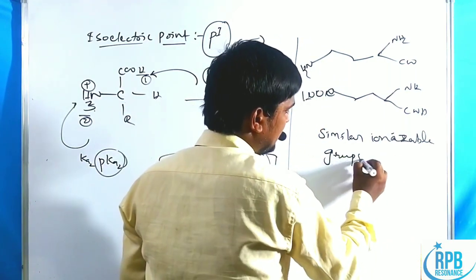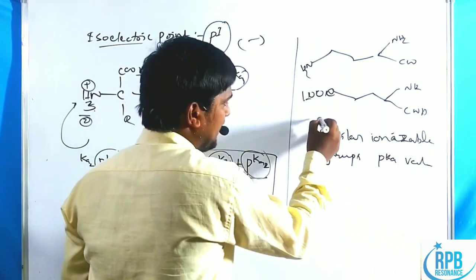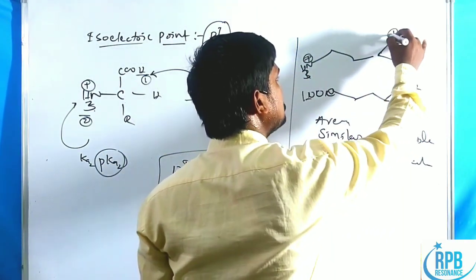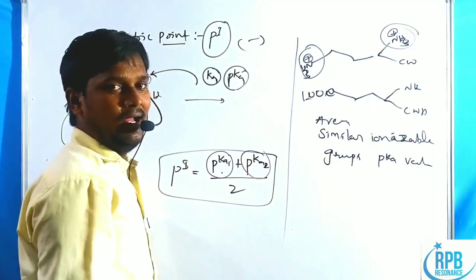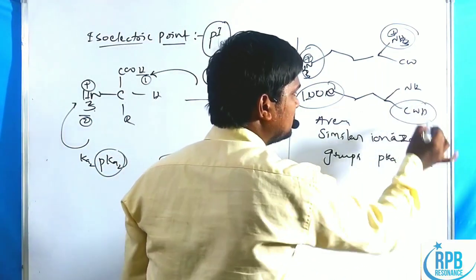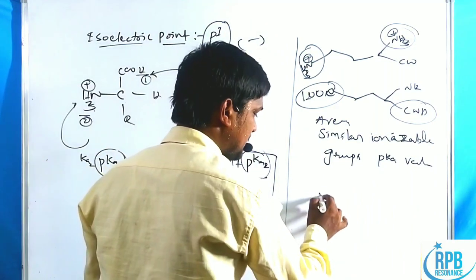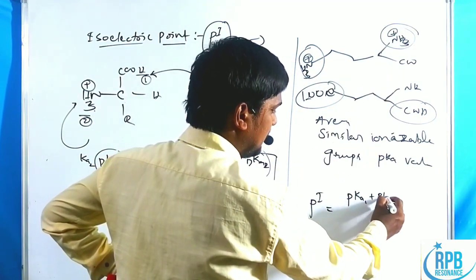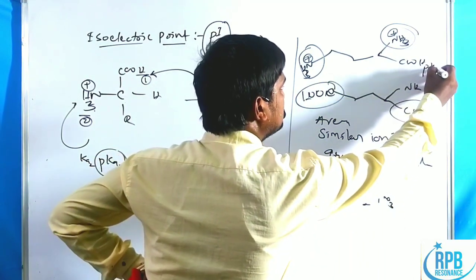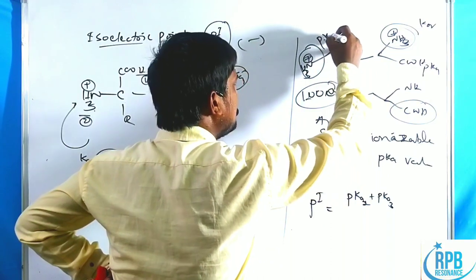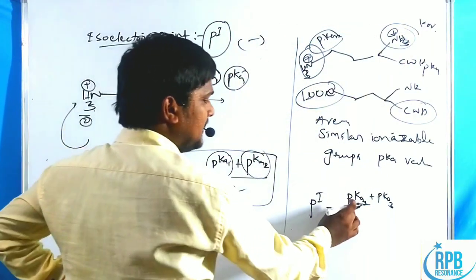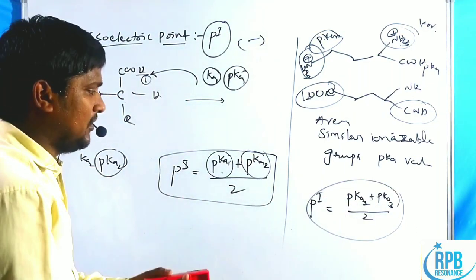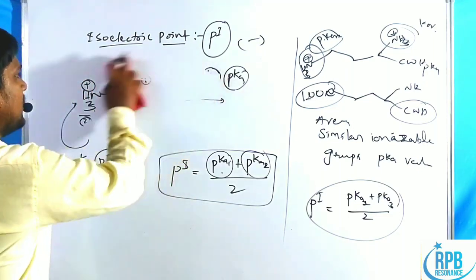For similar ionizable groups, we take the average of their pKa values. For basic amino acids like lysine with two NH3+ groups, the pI is the average of the two amine pKa values (pKa2 and pKa3). For acidic amino acids with two carboxylic acid groups, the pI is the average of the two acidic pKa values (pKa1 and pKa2). This is the correct method — not the average of all three pKa values.